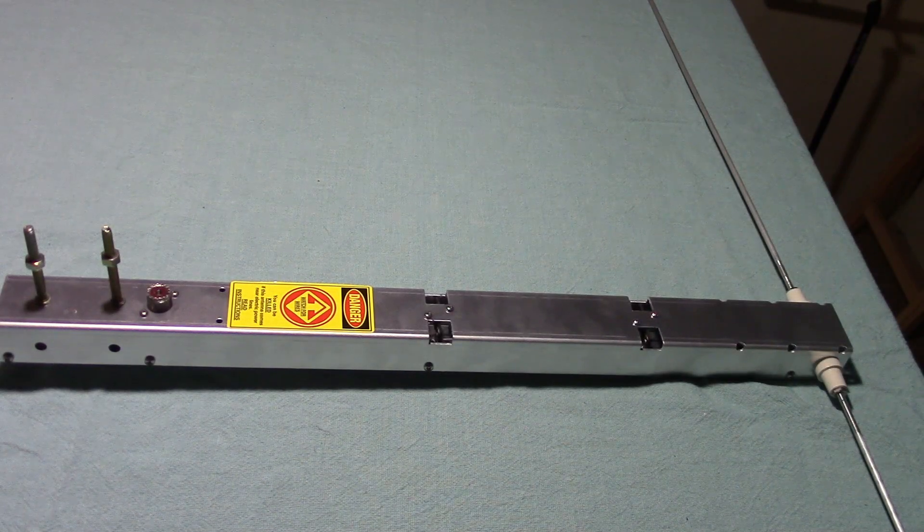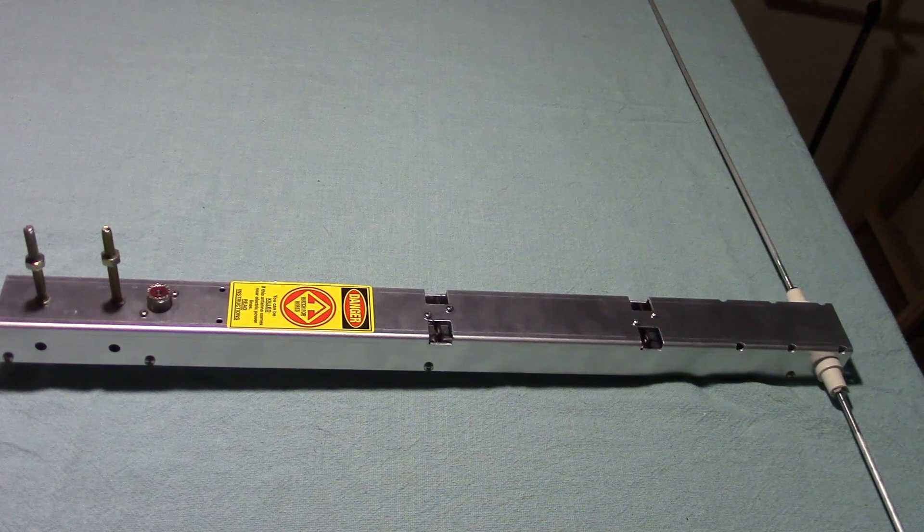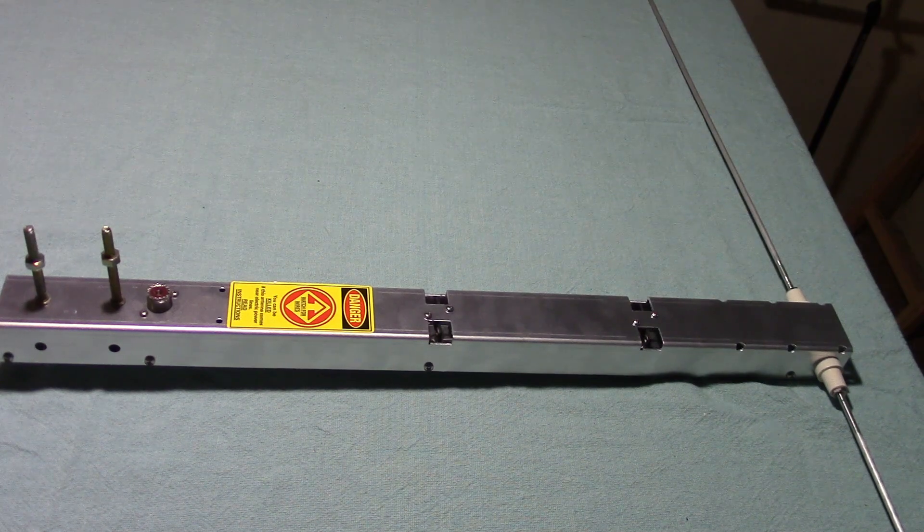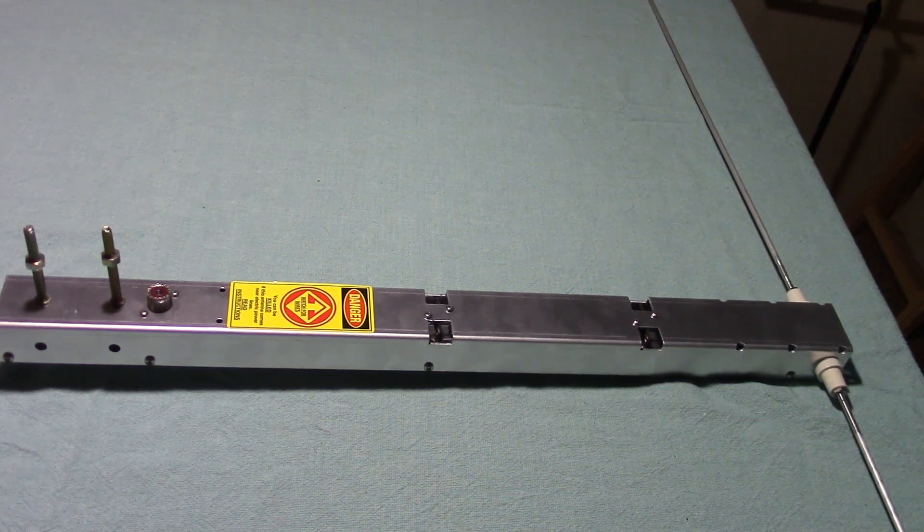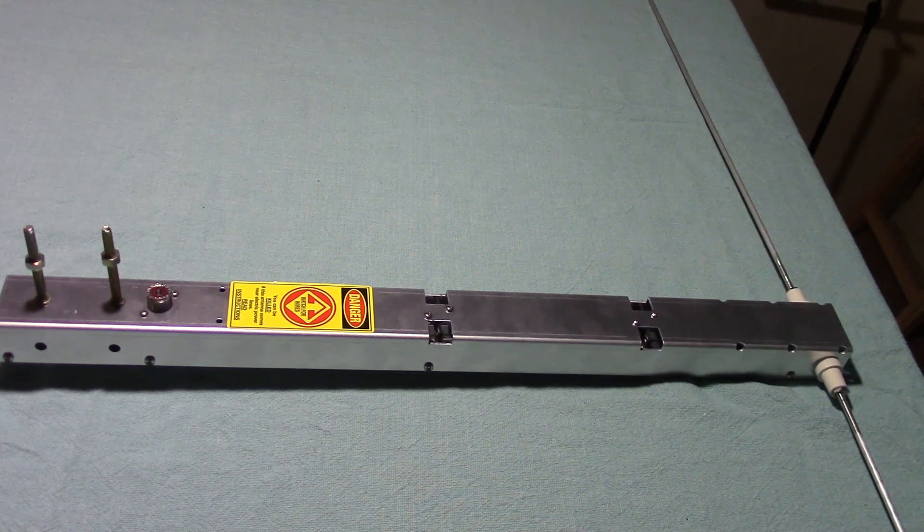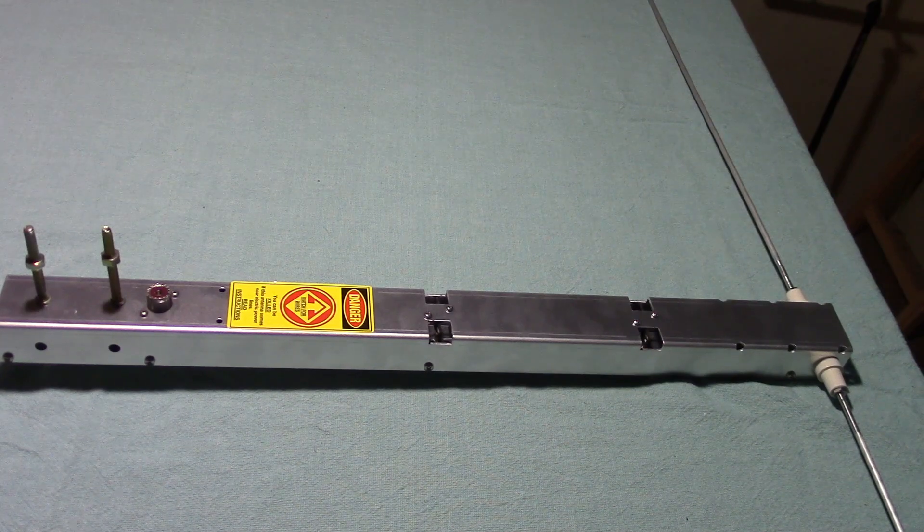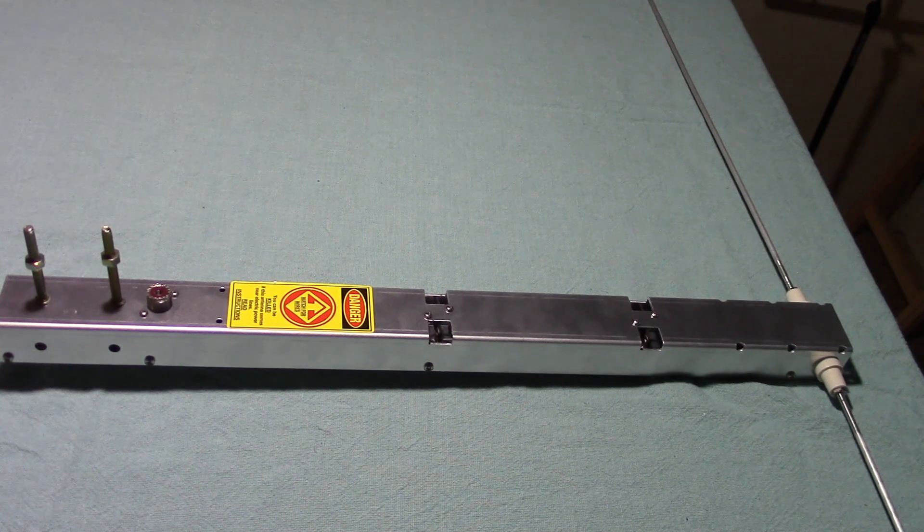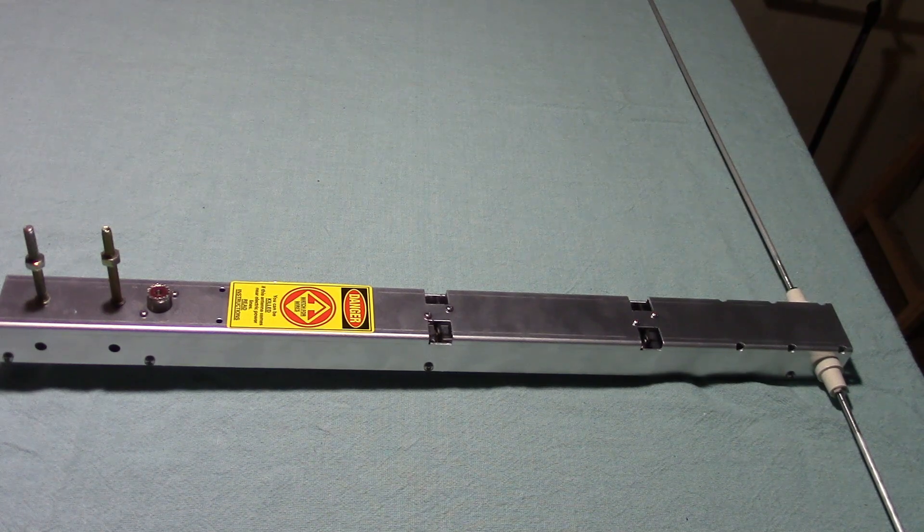Welcome back to episode 28 of Airwaves. We're reviewing the MFJ 5 eighths wave antenna. It's a 6 meter and 2 meter dual band antenna. According to MFJ and their specs on this antenna, it gives twice the omnidirectional gain of a single 5 eighths wave antenna. MFJ's stacked 5 eighths wave radiators give you more than twice the omnidirectional gain of a single 5 eighths wave radiator.